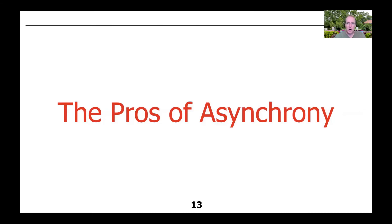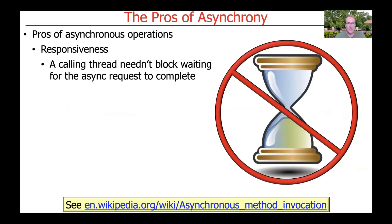So that's a quick overview of asynchronous programming. Let's talk about the pros and cons of this model. One key benefit is that it tends to be a lot more responsive, because the calling thread doesn't need to block waiting for the asynchronous request to complete — you're doing asynchronous method invocation. This allows the user interface to be responsive, so you don't get the dreaded hourglass or the color wheel you used to get with Windows or Mac OS when something blocked the user interface thread.